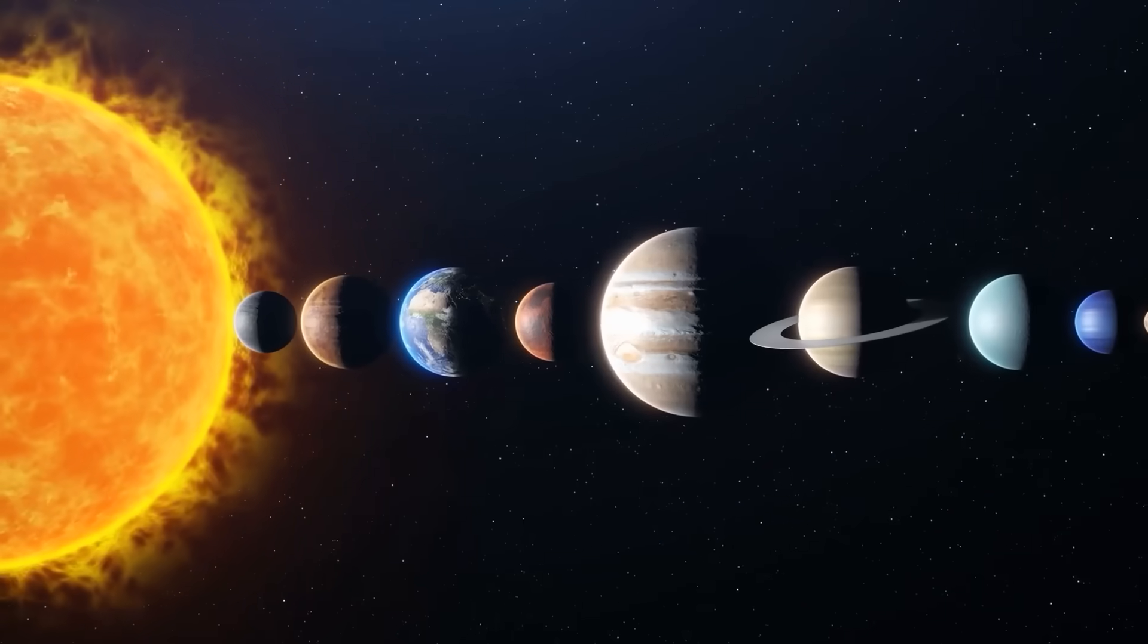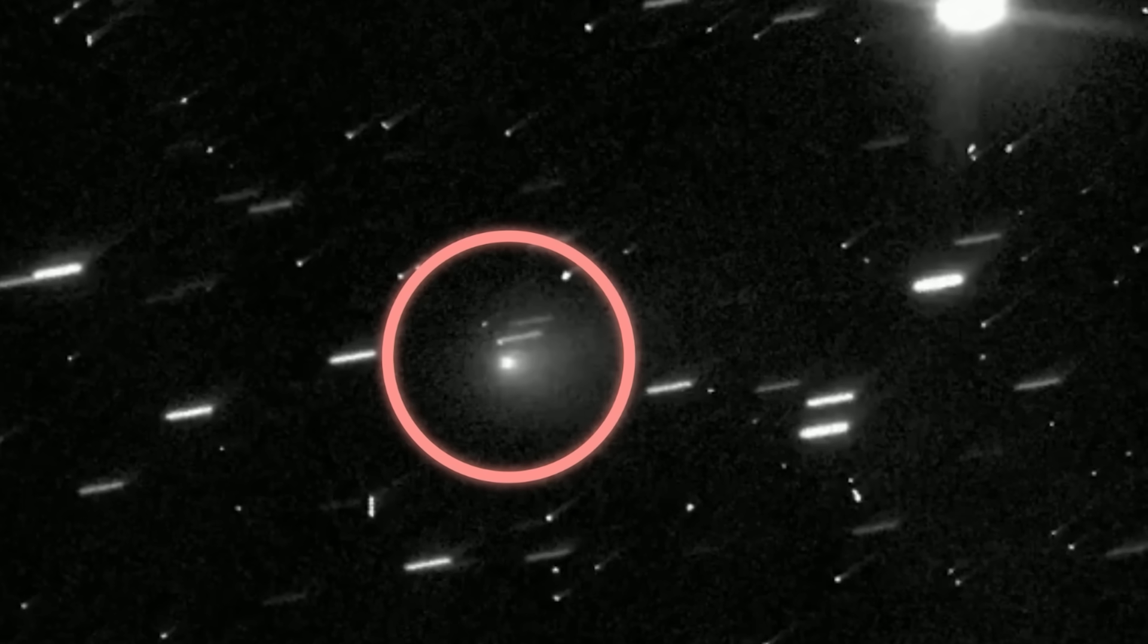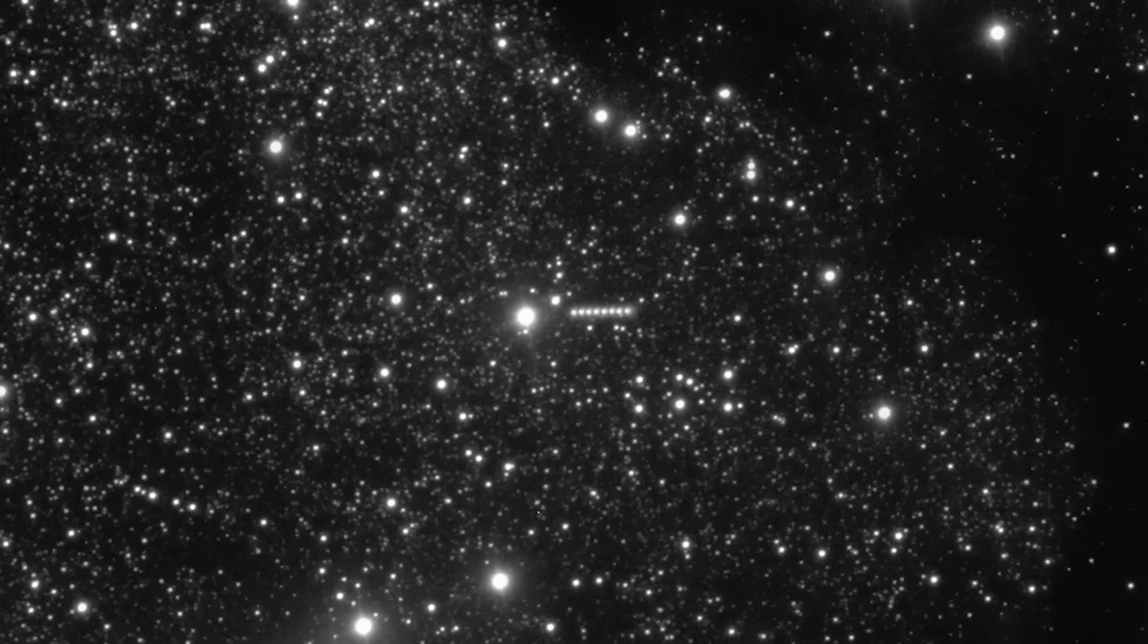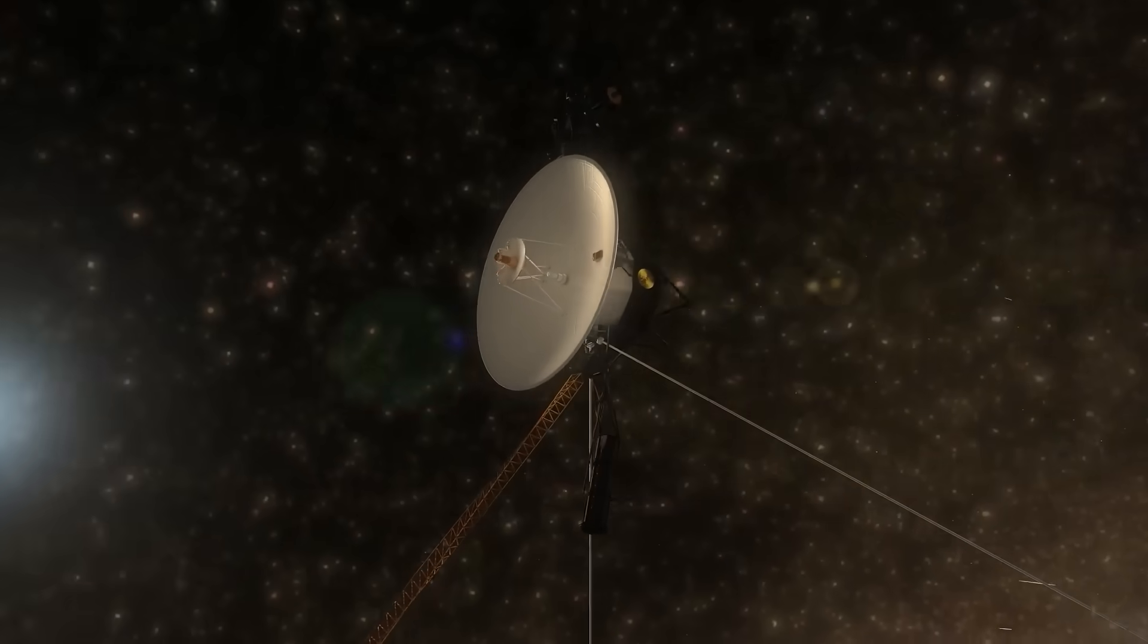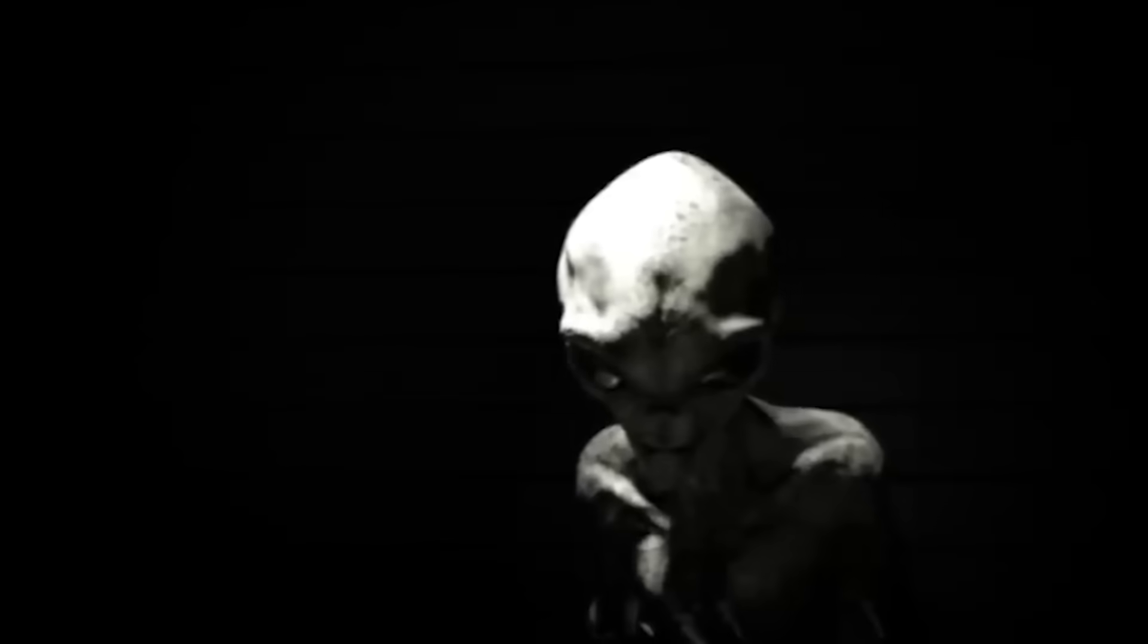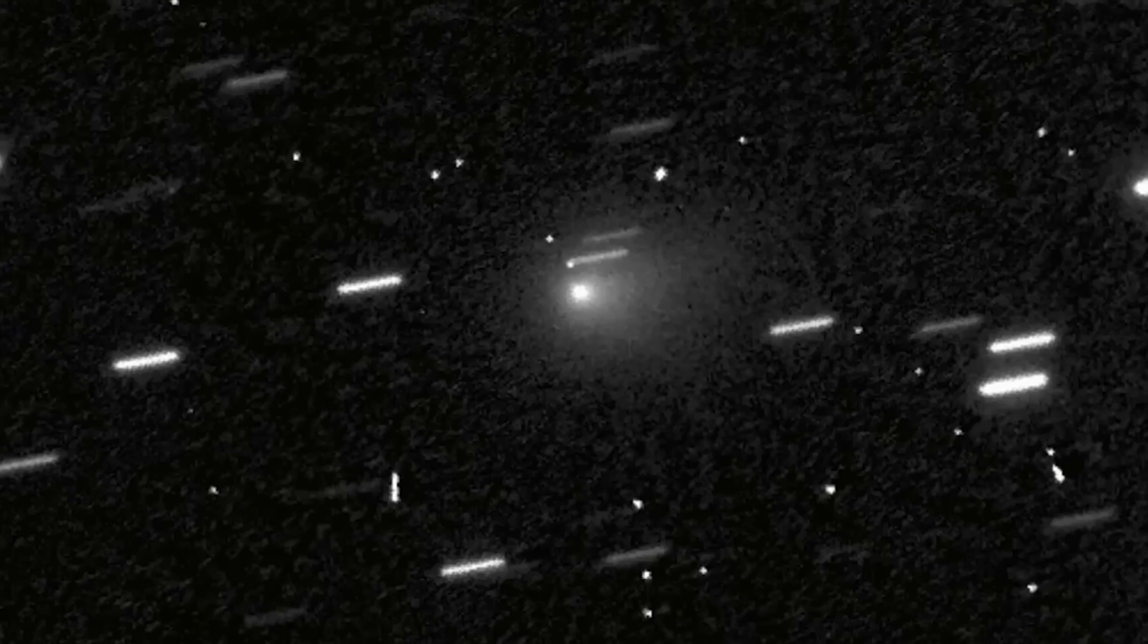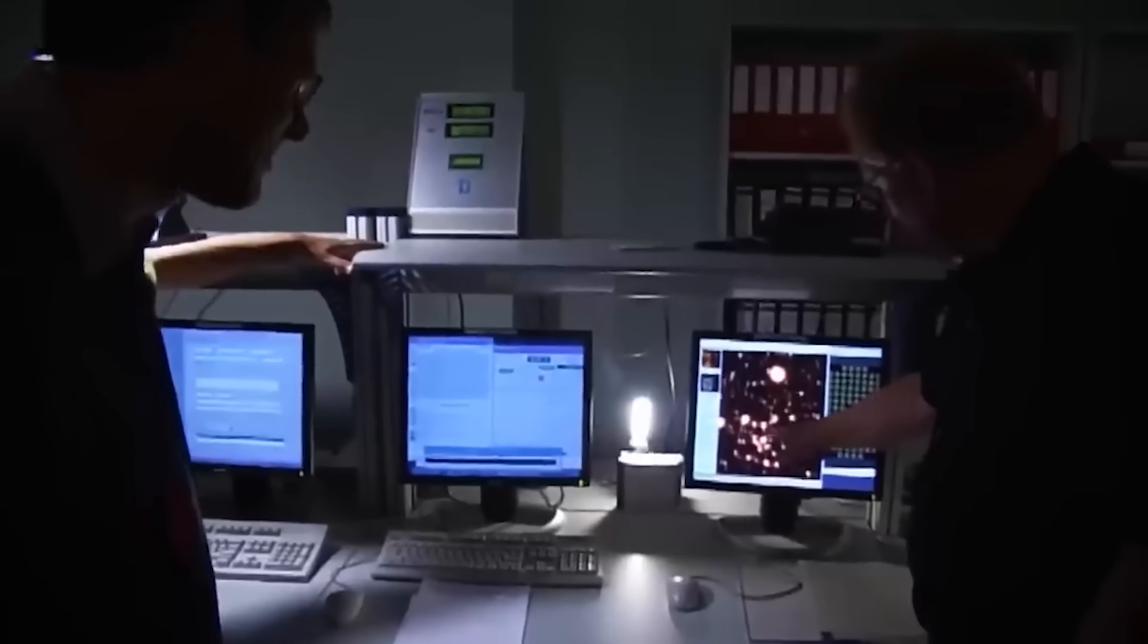This brings us to a final, more unsettling theory. What if the object's purpose is simply to be seen? What if its strange properties and impossible trajectory are designed to catch our attention, to see if anyone is home, and if we're smart enough to notice? It wouldn't be a probe to survey us, but a test to see how we react. When you look at it that way, the alien explanation starts to sound a little less crazy. Does all of this just happen overnight? Are we missing a key detail? Perhaps the simplest explanation, as strange as it sounds, is the right one. This is the heart of the debate, and it's one that will rage on for years to come.